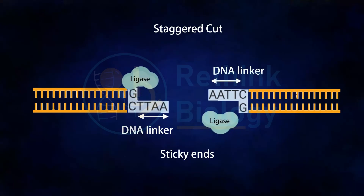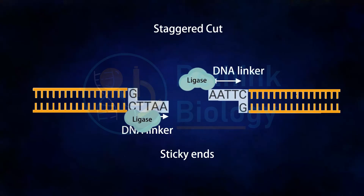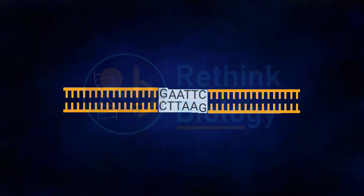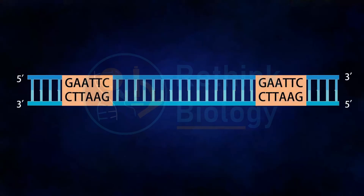The single-stranded DNA linkers are complementary to each other and are called sticky ends. The sticky ends can pair with each other and join together with the help of DNA ligase enzyme, which helps in reforming the phosphodiester bonds of DNA. This production of complementary sticky ends in DNA fragments to be cloned is important in the formation of recombinant DNA.